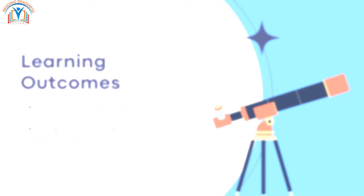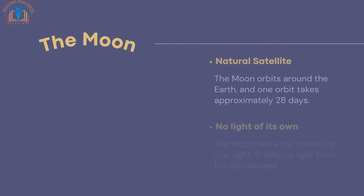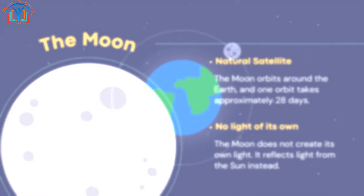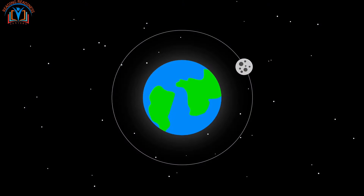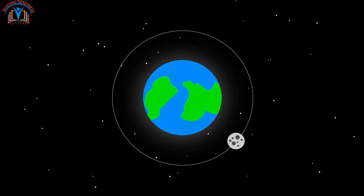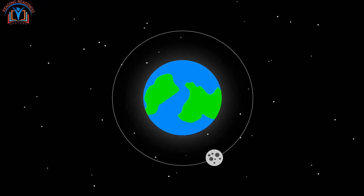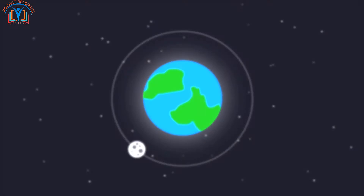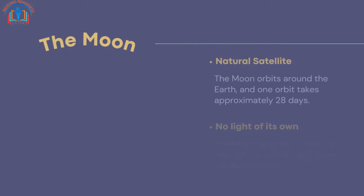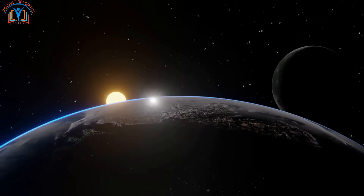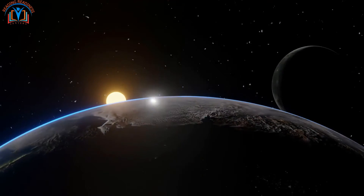The moon is a natural satellite. It orbits around the Earth, and one orbit takes approximately 28 days. The moon does not create its own light — it reflects light from the sun instead.